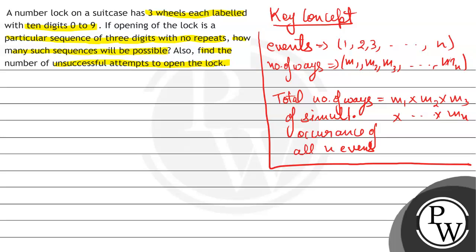The question कह रहा है कि एक number lock है सूटकेस में, जिसमें 3 wheels हैं. It means 3 places हैं. इनका एक sequence है, ऐसा sequence है कि कोई भी digit repeat नहीं हो रहा है.